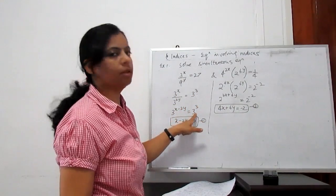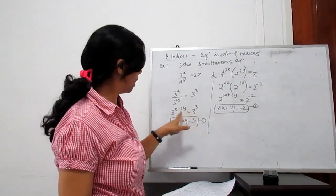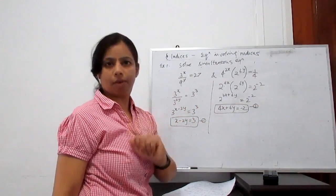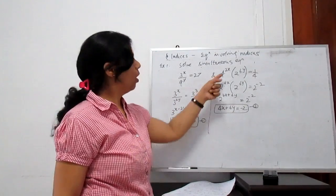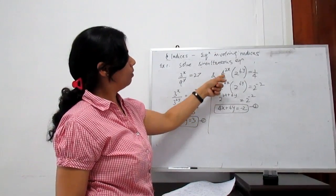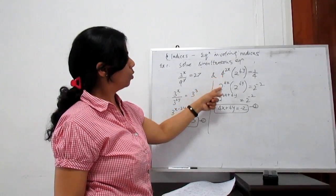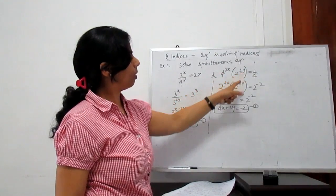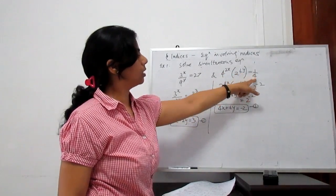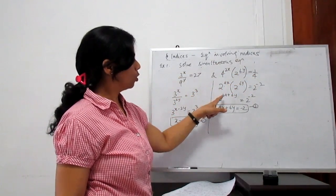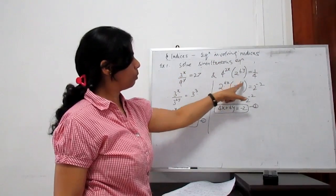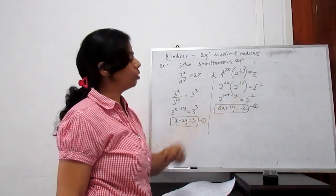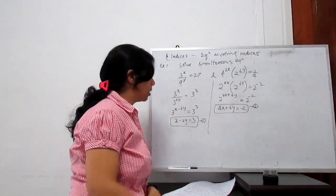Since the bases are the same, we get x minus 2y equals 3 as the first linear equation. For the second equation, convert into base 2: 4 to the power 2x is 2 to the power 4x, and 1 by 4 is 2 to the power minus 2. So 4x plus 6y equals minus 2 is the second equation.